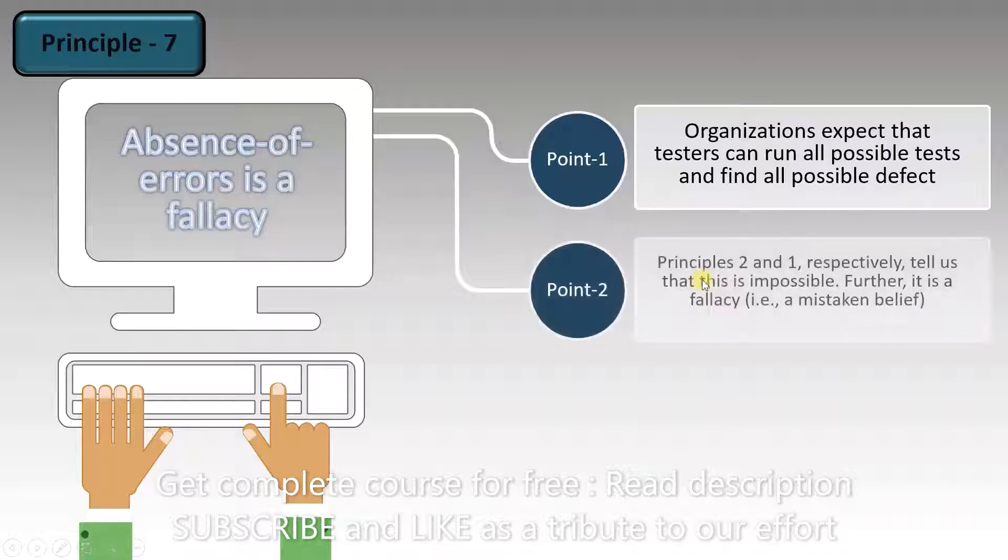Point 2: Principles 2 and 1 respectively tell us that this is impossible. If you recall, principle 2 says that exhaustive testing is impossible, and principle 1 says that we can never find all the bugs. We can claim to have found a bug, but we can't claim that there are no defects left in the software. Further, it is a fallacy, i.e., a mistaken belief. This is an incorrect belief that a tester can find all the mistakes that exist in a software.